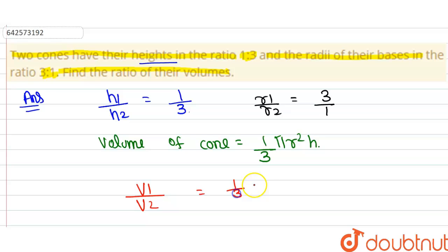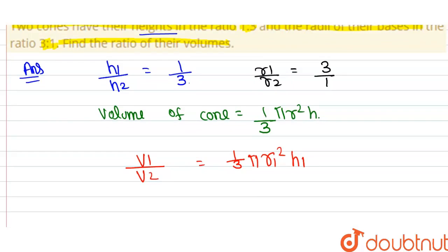That equals 1 by 3 pi r1 square h1, where r1 and h1 are the radius and height for cone 1, divided by 1 by 3 pi r2 square h2, where r2 and h2 are the radius and height for cone 2.